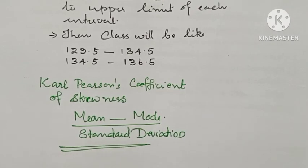The Karl Pearson coefficient of skewness is mean minus mode divided by standard deviation. So we have to find mean, mode, and standard deviation.